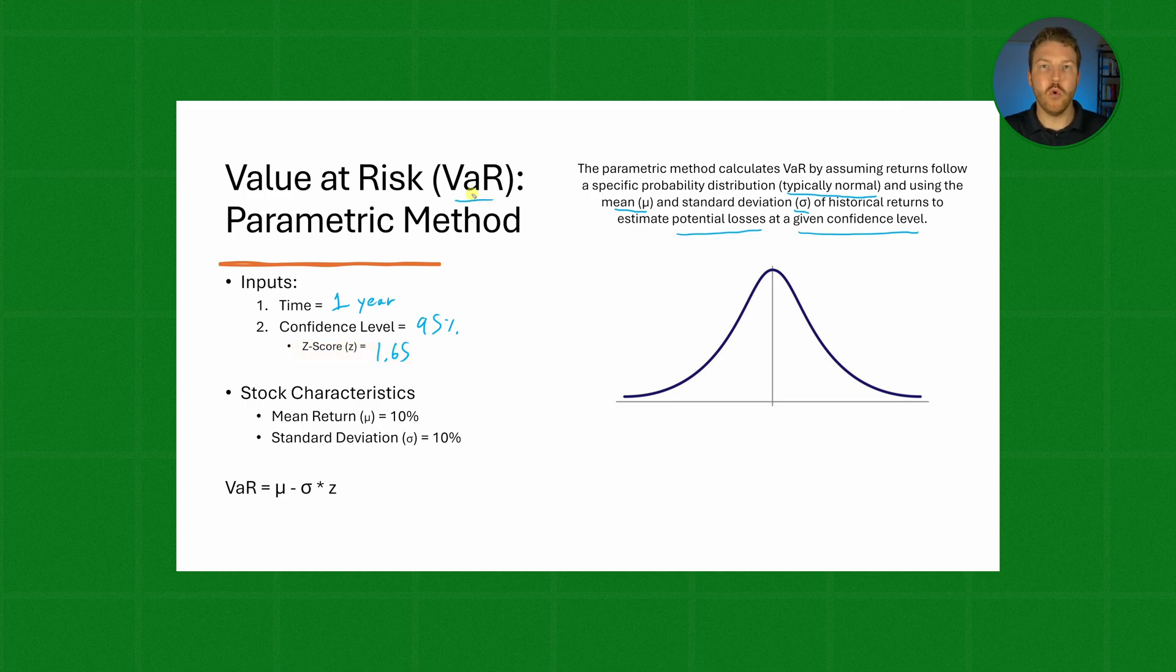VaR is always going to be a one-tailed test because we're only interested in the losses, not the gains.